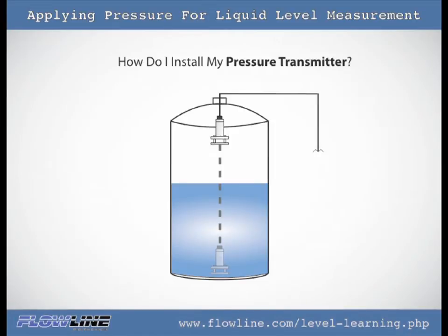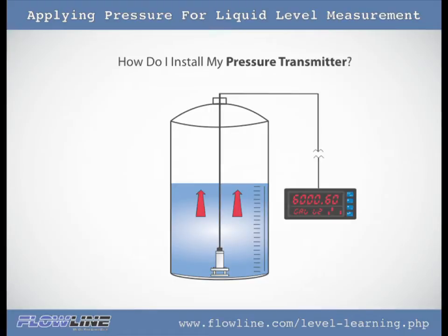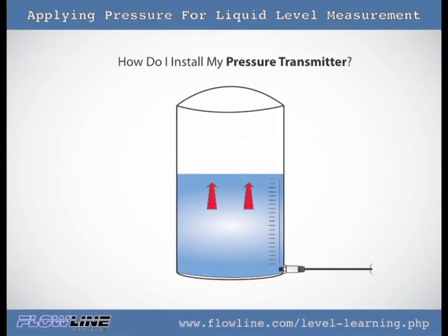Pressure level transmitters are typically installed by inserting the transmitter through the top of the tank and lowering it until it reaches the bottom. This allows the pressure transmitter to provide accurate results for the entirety of the tank as it measures the pressure above. There is another method involving inserting an external pressure transmitter to the sidewall of the tank to measure the pressure of the liquid above.